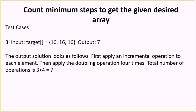In the third test case the target array is [16, 16, 16] and the output is 7. We first increment the value of each element by one — that counts as three operations. Then we apply the doubling operation four times, which doubles the whole array each time, turning 1 into 16 for all elements. That is four more operations, giving a total of seven.